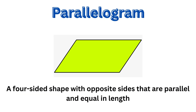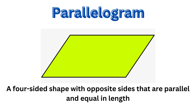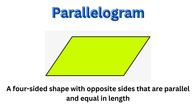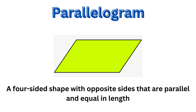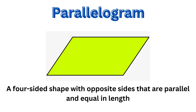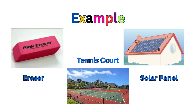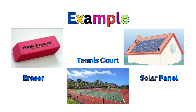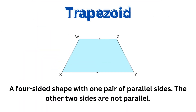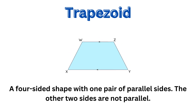This is a parallelogram — a four-sided shape with opposite sides that are parallel and equal in length. Examples are an eraser, a telescope, and a solar panel.